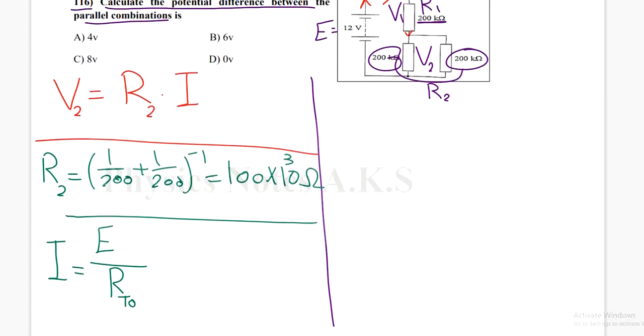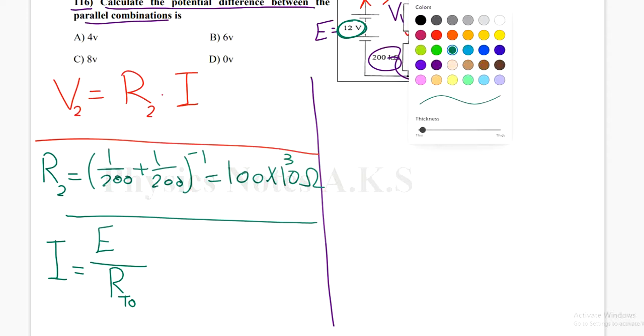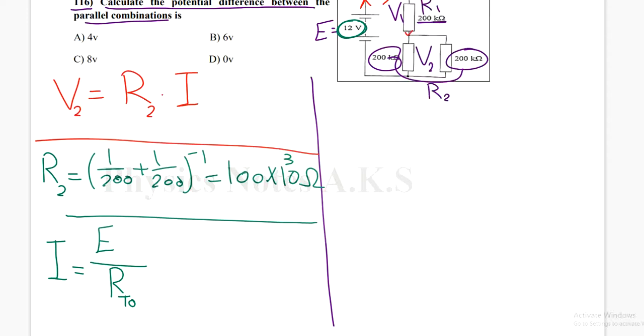I have the electromotive force, which is, as you can see, it's here 12, right? But the R total, I don't have it. It's the total resistance of the whole circuit. Let's find R total.